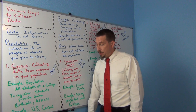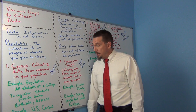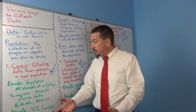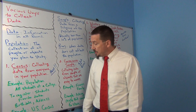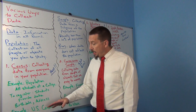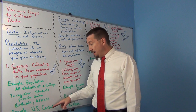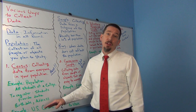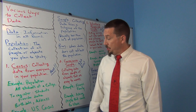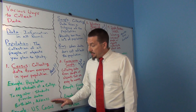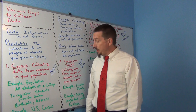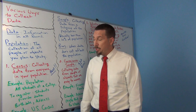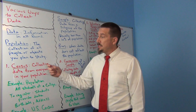Another example is the U.S. Census. Every ten years we have a census in the U.S. and they try to get information from as many people living in the U.S. as possible. They don't succeed in getting everybody — some people fall through the cracks — but they do get a very large percentage of the population, and that data is very useful to the U.S. government.